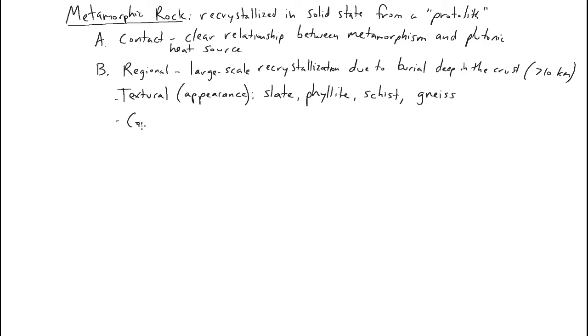We also have compositional classification of metamorphic rocks. We have marbles which come from metamorphosed carbonates, limestones and dolastones. We have quartzite, which is a metamorphosed sandstone. Both of these. We have greenschist, blueschist, and amphibolite. All three of these are metamorphosed basalt, but depending on the degree and the conditions of metamorphism it has different names.